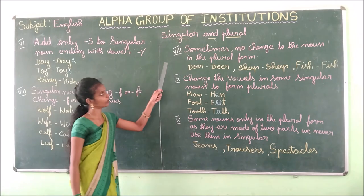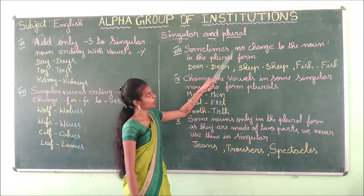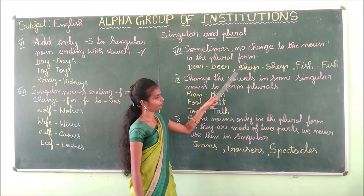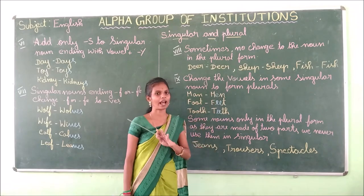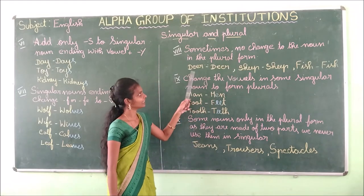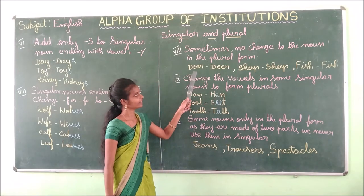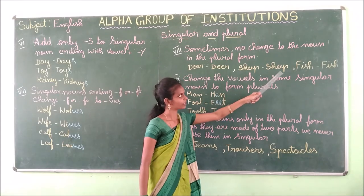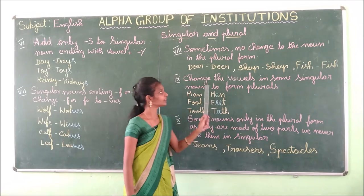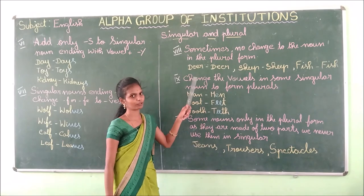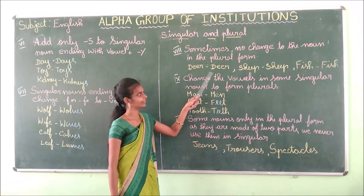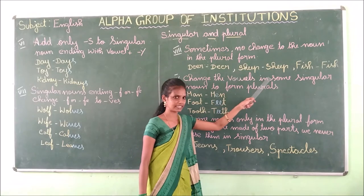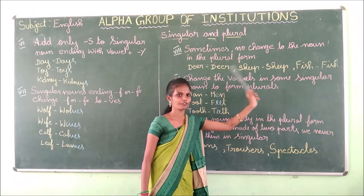Eighth rule: sometimes there is no change to the noun in the plural form. Examples: sheep→sheep, fish→fish. Repeat: sheep, sheep; fish, fish.